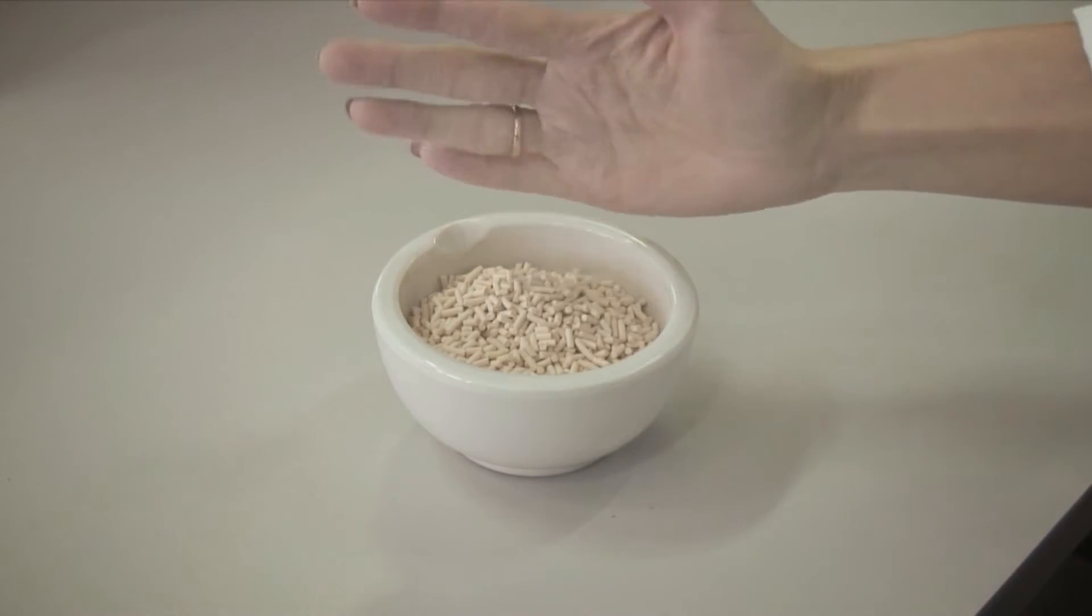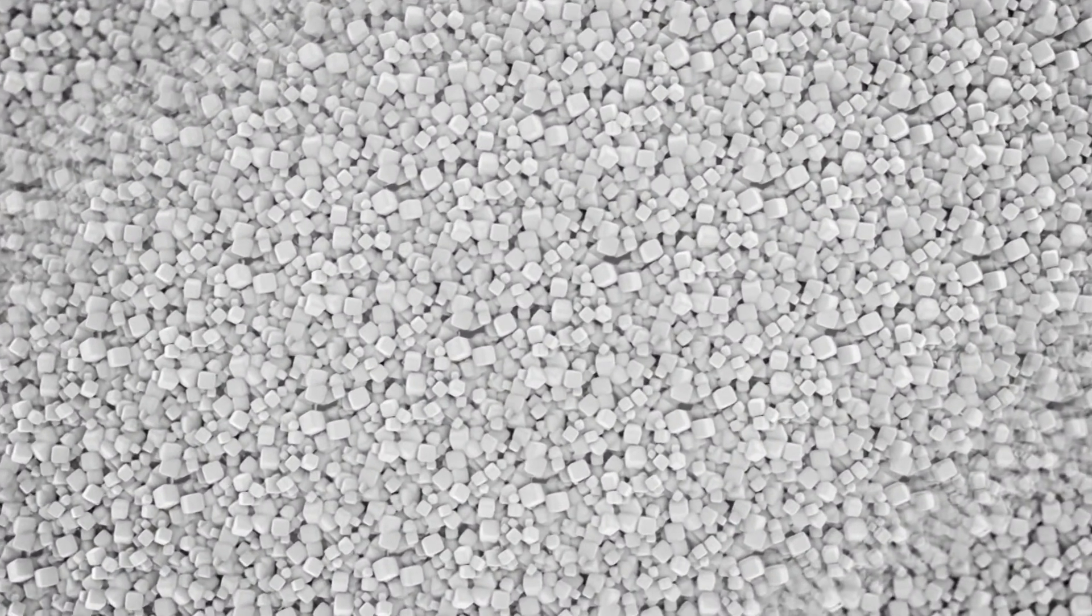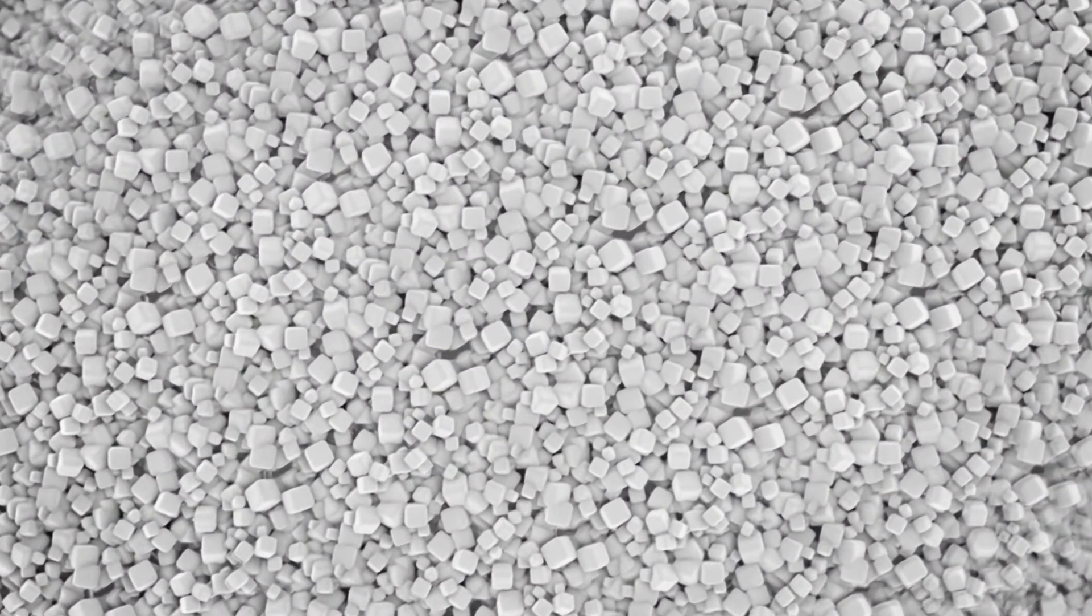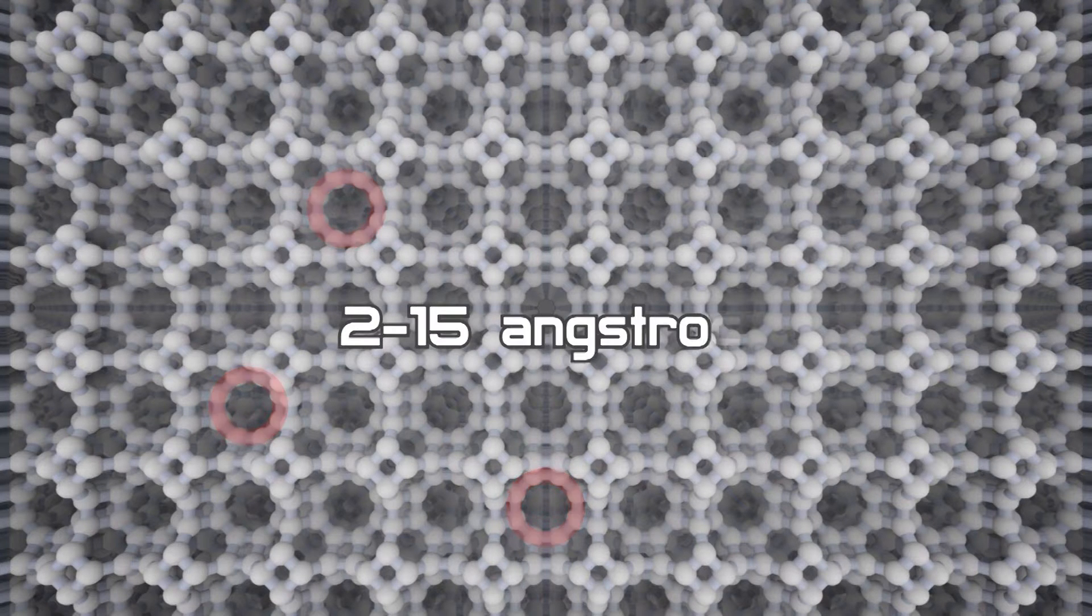Synthetic zeolites are produced in the form of granular extrudates, which have different microcrystalline structures. The input window of the molecular lattice can vary in size from 2 to 15 angstroms, depending on what chemical process the zeolites are intended for.